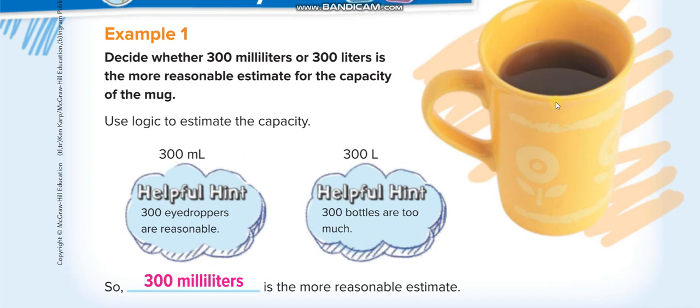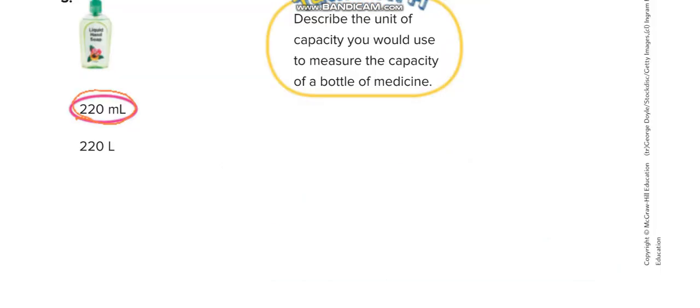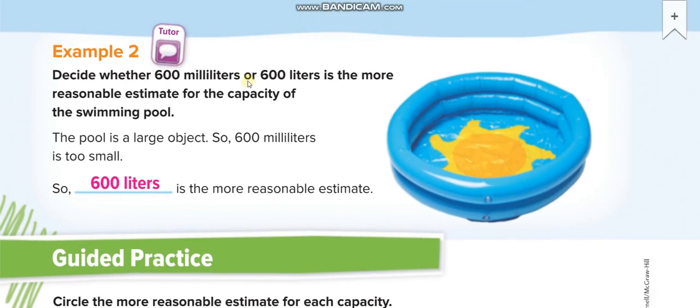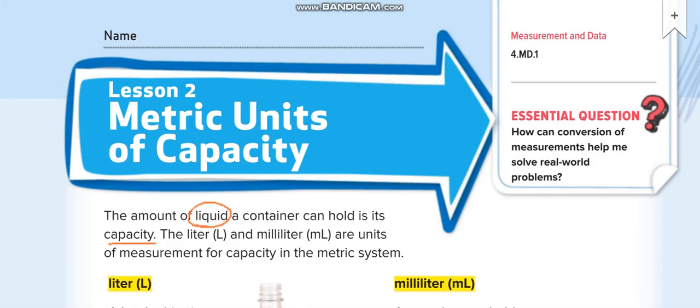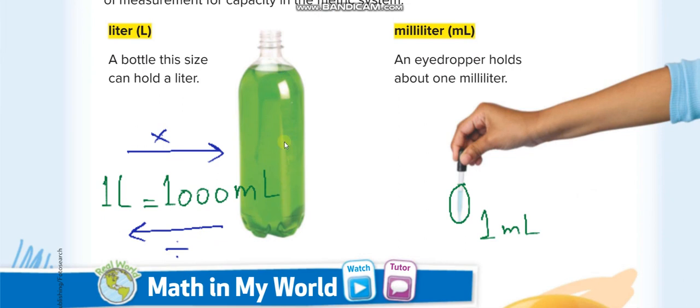Now this pool - if we say 600 milliliters, it's not enough to fill one bottle even, because this bottle even gets filled with 1000 eyedroppers, 1000 milliliters.